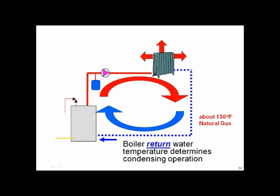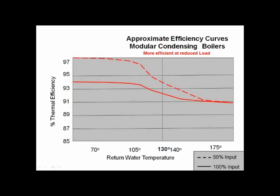In a nutshell: the heck with your supply water temperature — I'm worried about return water. I want to make sure I'm below 130, but I'd rather be colder. The colder I am on the return, the better off I am. Now you begin to see what delta T means. Maybe pressure independent control valves, where I can push the delta T up, might be helpful — and that's where we're trying to take you.